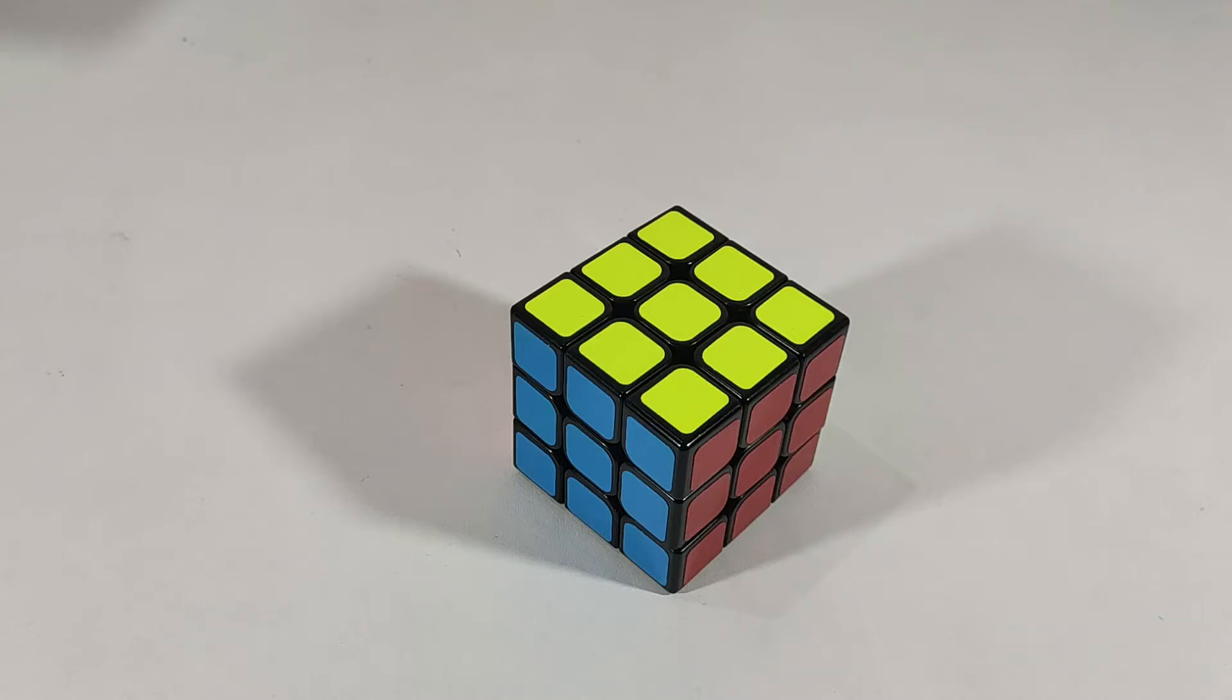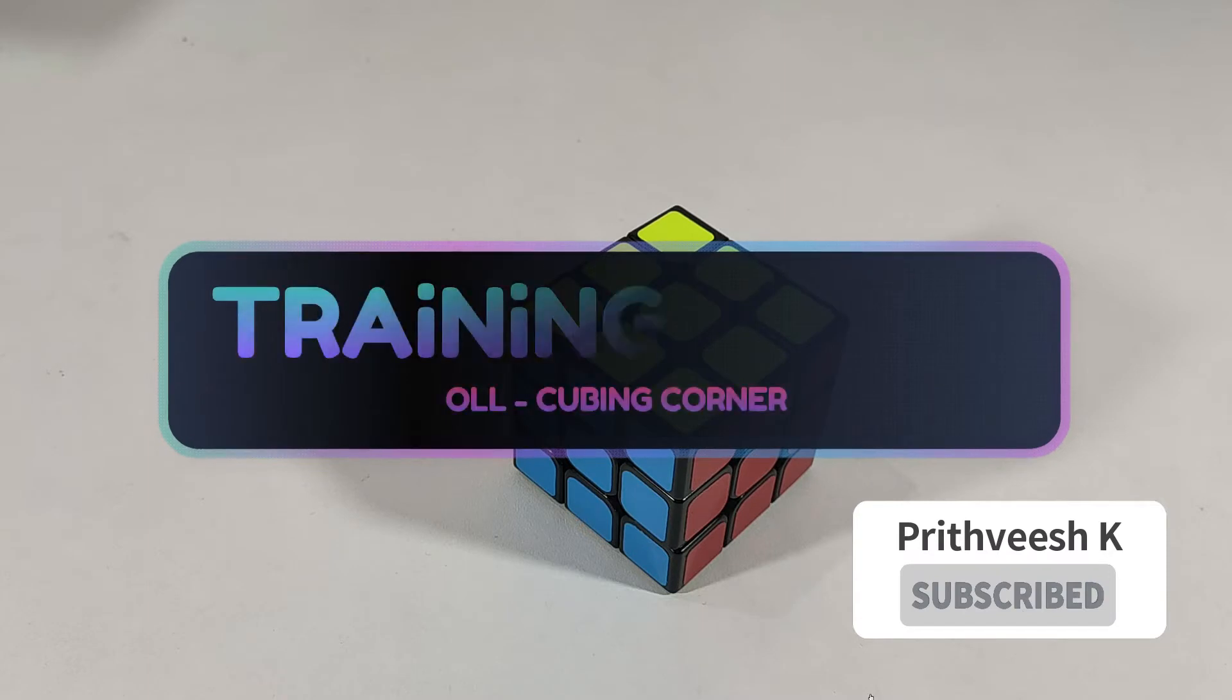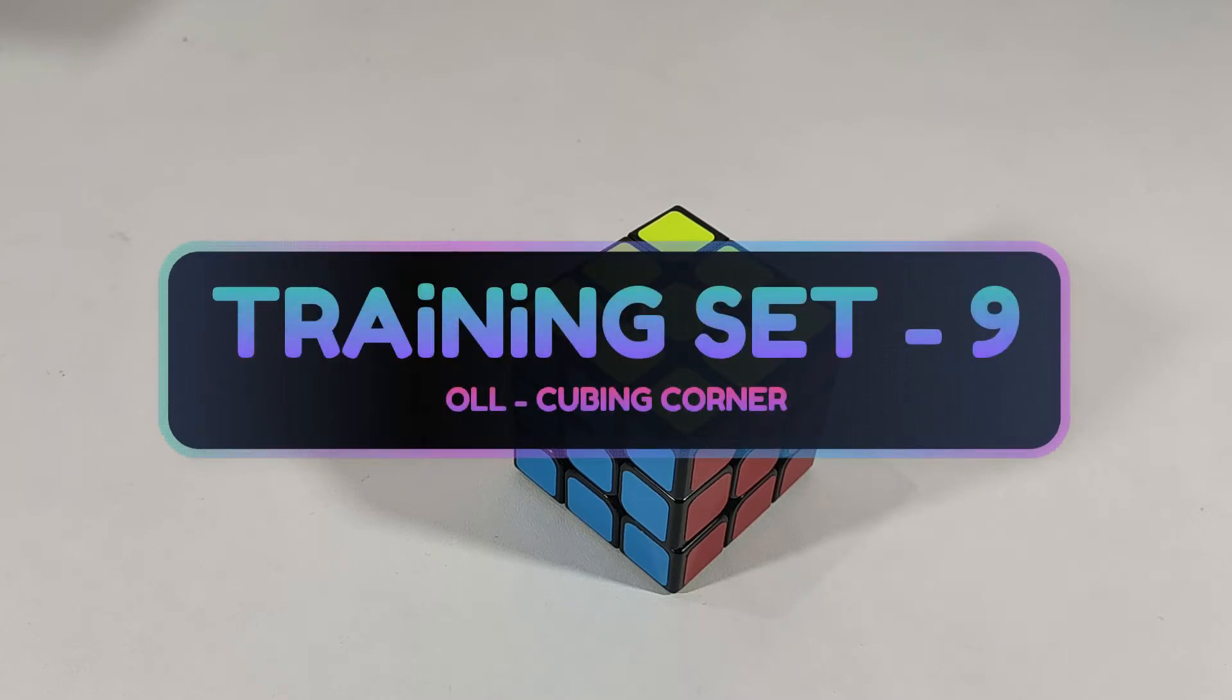Hello guys, welcome to another episode of Cubing Corner. You are in training set number 9. I call it Fish and Food. Let me show you why I call it like that.